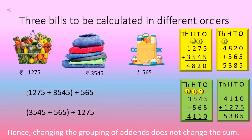When they came back home, they decided to calculate how much they had spent. So Arpit added Rs. 1,275 and Rs. 3,545 first and got Rs. 4,820. Then he added Rs. 565 to get a total of Rs. 5,385. But he was not satisfied and wanted Ambika to check whether he had calculated it correctly.